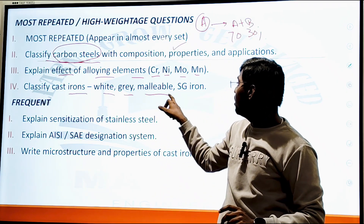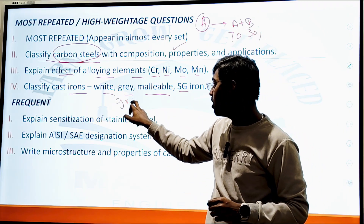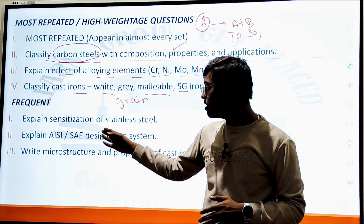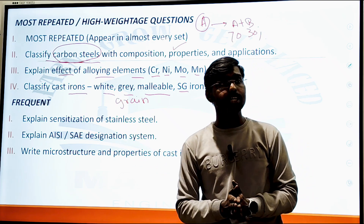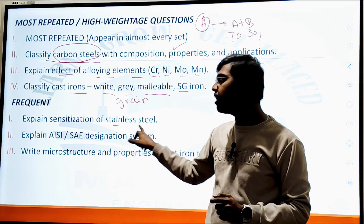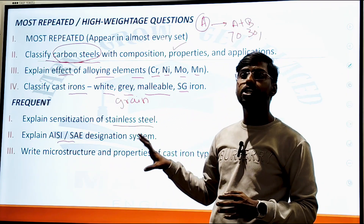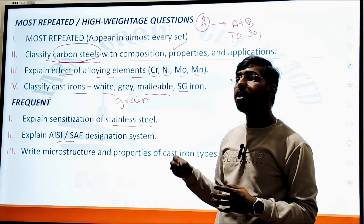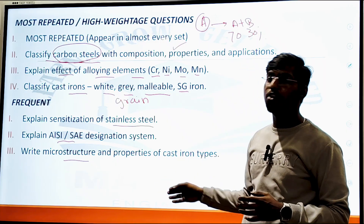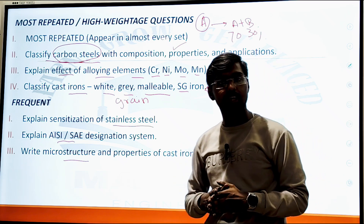Classify cast iron types: white, gray, and others — about three to four types. Draw the grain structure, material composition, and explanation for each. Also explain the sensitization of stainless steel: how the process happens, and state the advantages and disadvantages. AISI and SAE designation standards to identify material types are also asked, along with microstructure and properties of cast iron.